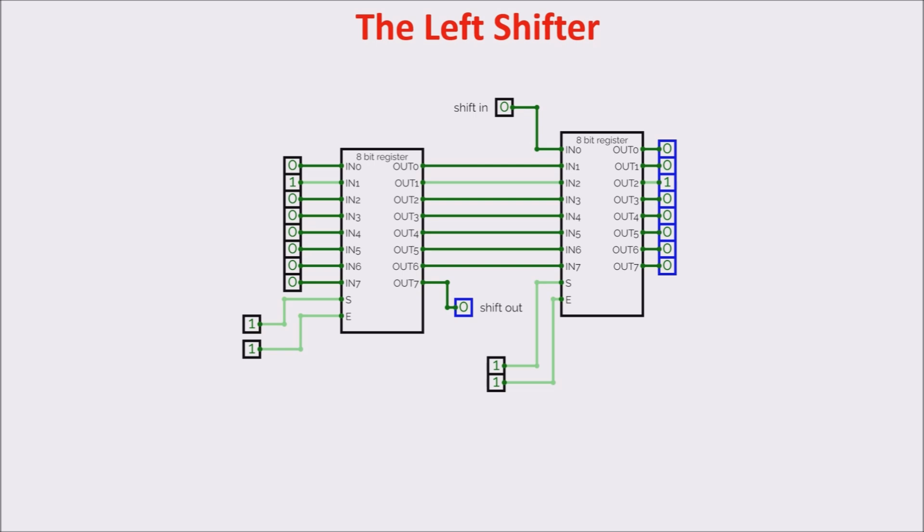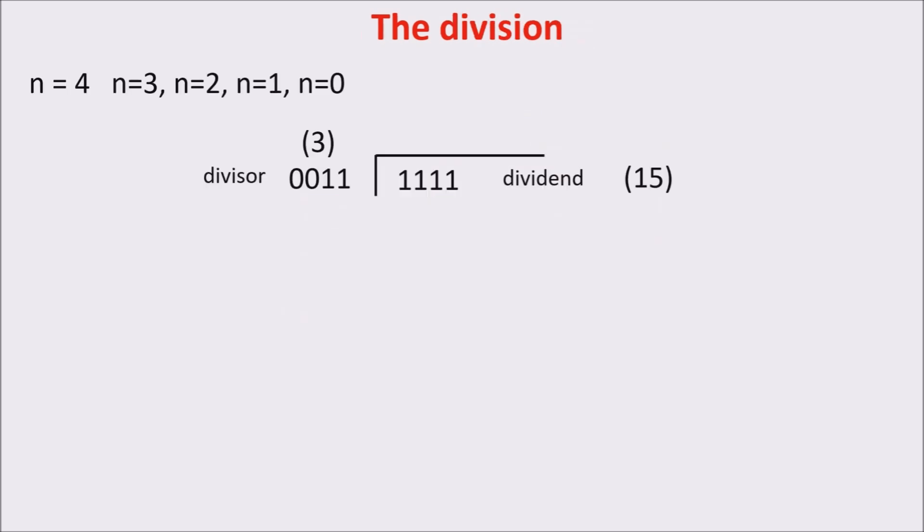And we need also some registers to store the intermediate results. For the division, things are even more complicated, but I show you a basic way to divide with left shifter and subtraction. We consider a 4-bit example. So n is equal 4. We have just to left shift the divisor from 3 to 0 steps, and in each step we check if the shifted divisor is larger than the dividend. In this case, we put 0 as quotient, else we put a 1 as quotient, and we subtract the shifted number from the dividend, updating the dividend. Let's see step by step.